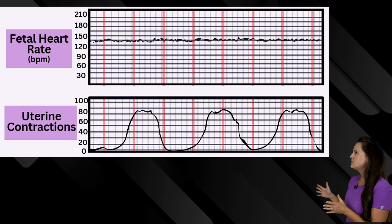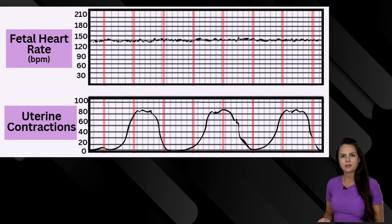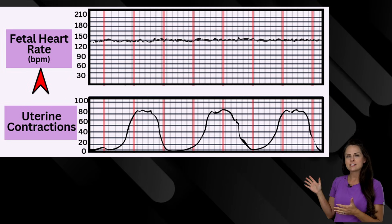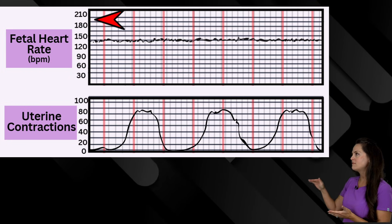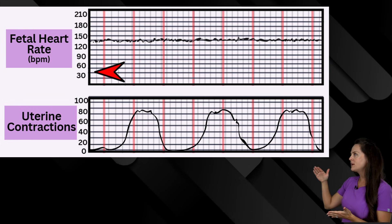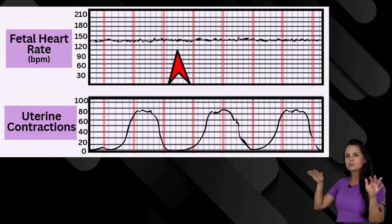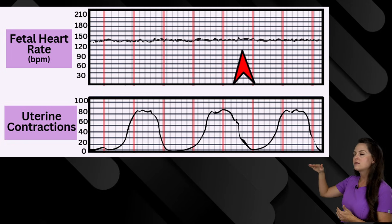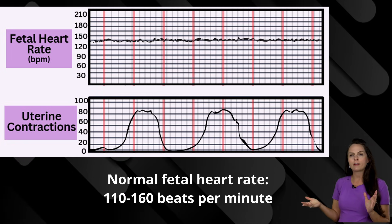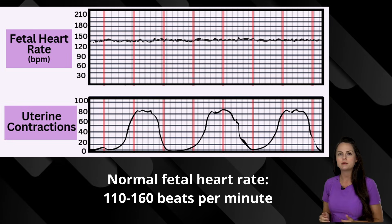Whenever you're looking at fetal heart tone monitoring, there are a few things you want to be familiar with. On the top, you're going to see the fetus's heart rate. You have numbers on the side that tell you heart rate ranges, and then you're going to have a squiggly line on the grid showing you how the baby's heart rate is trending. A normal fetal heart rate is anywhere between 110 to 160 beats per minute.